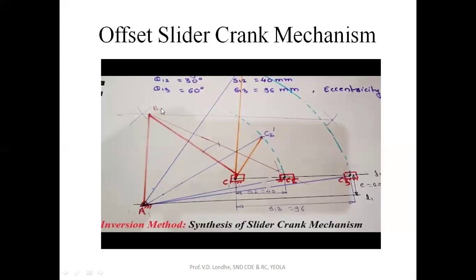The angle theta is made by the crank. The first position of the crank is known, the second position is given as 30 degrees, and the third position is given as 60 degrees. Join point A to C2 and point A to C3. From the reference line A to C2, mark angle theta one-two as 30 degrees, and from A to C3, mark an angle of 60 degrees.